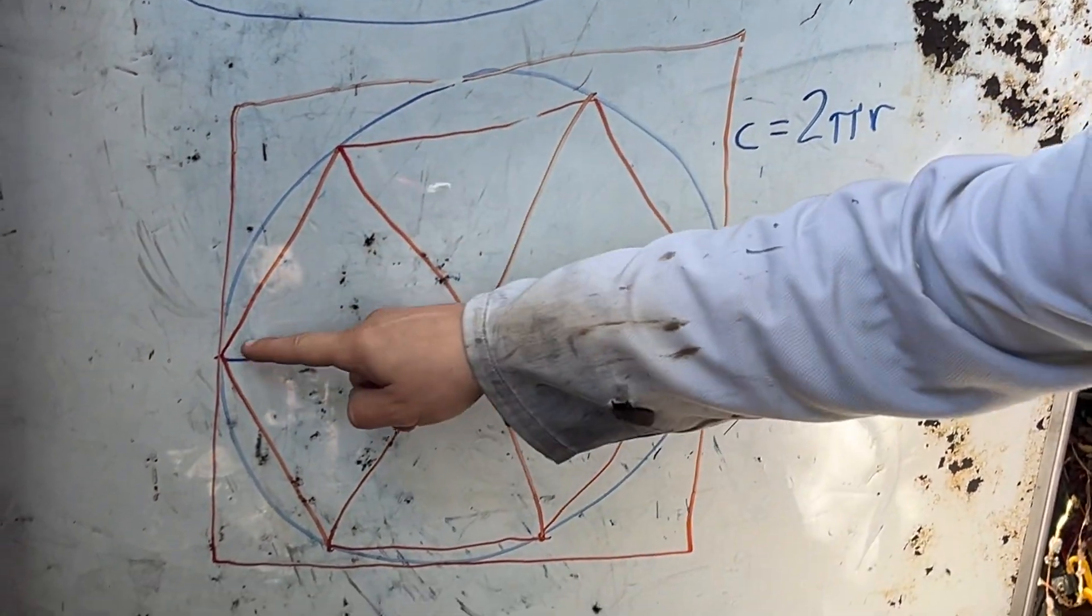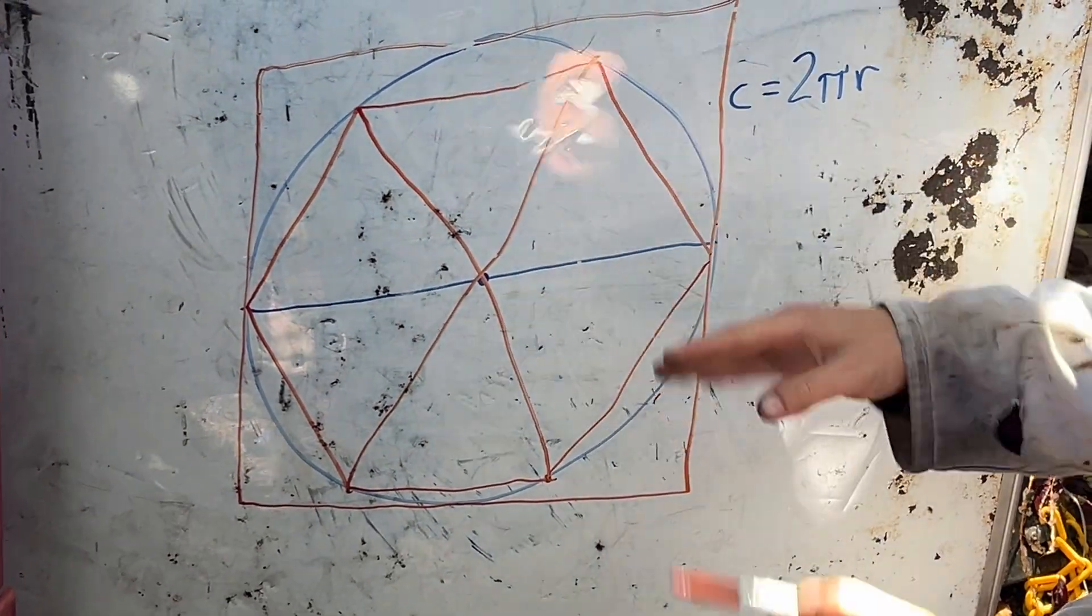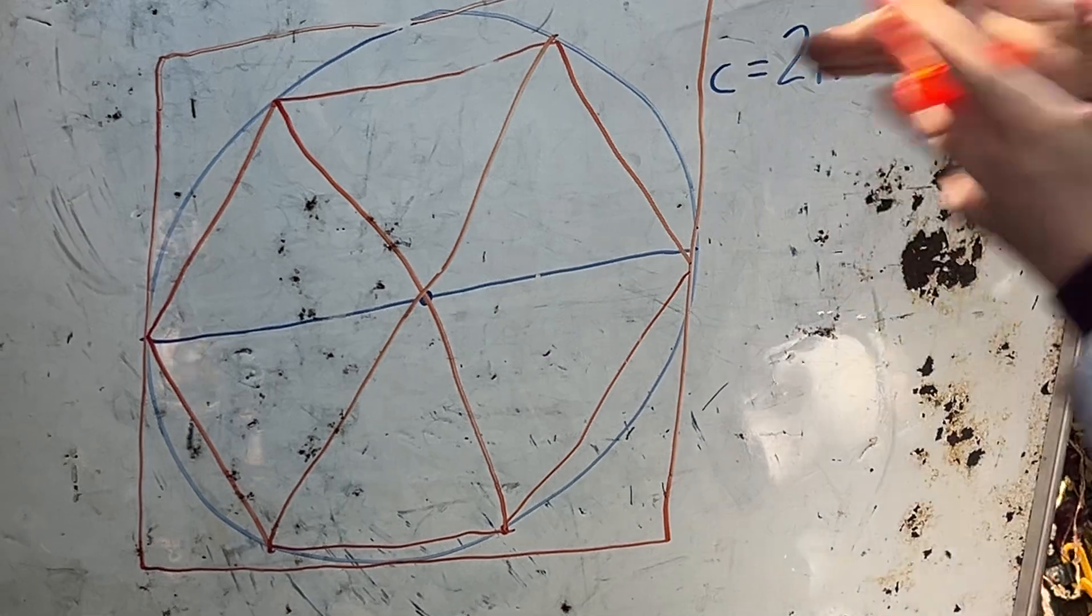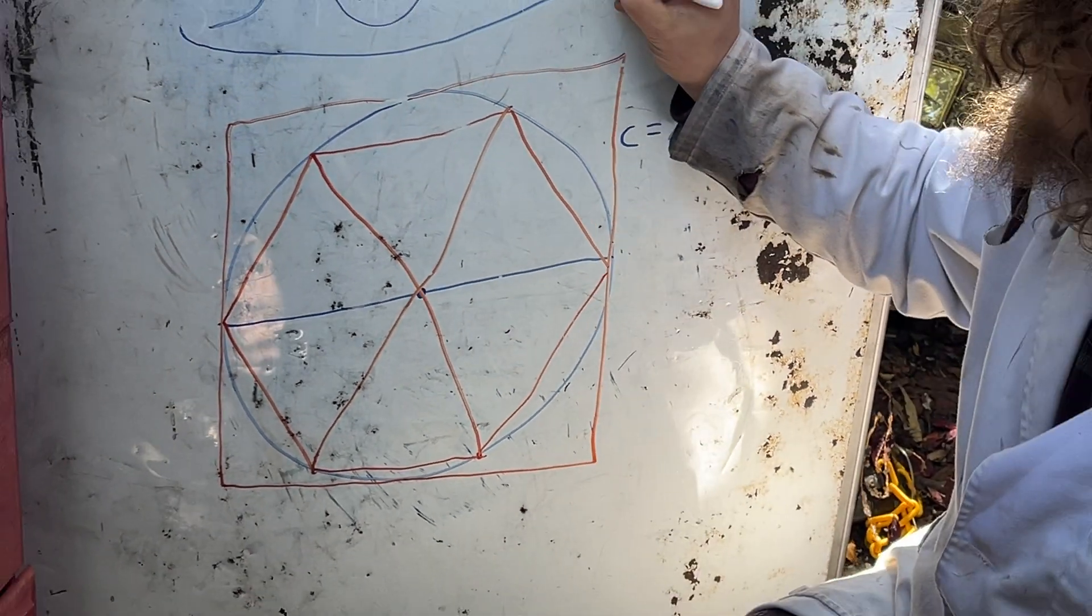Meaning that each of these hexagon sides is exactly equal to the radius. So the hexagon is six times the radius around.